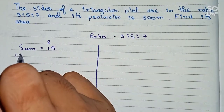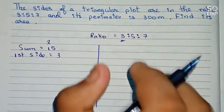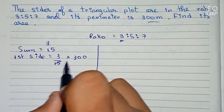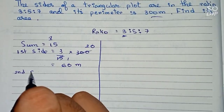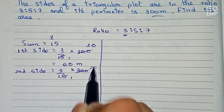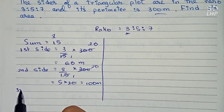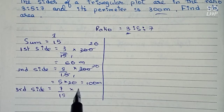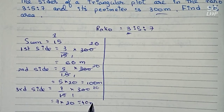The first side of the triangle equals 3/15 multiplied by 300. So 15 cancels to give 20, and 3 into 20 equals 60 meters. The second side equals 5/15 into 300, which gives 100 meters. And finally the third side equals 7/15 into 300, so 7 into 20 equals 140 meters.